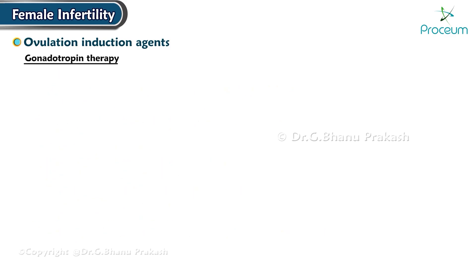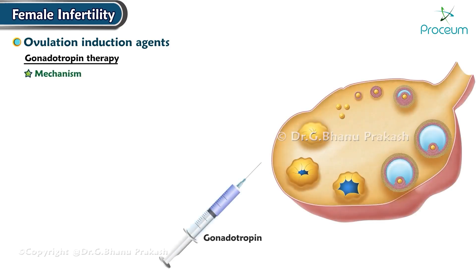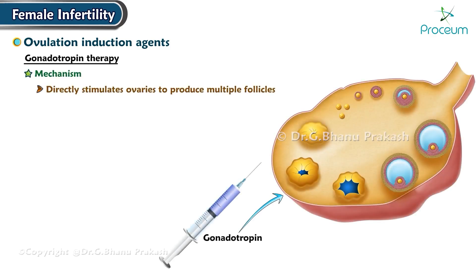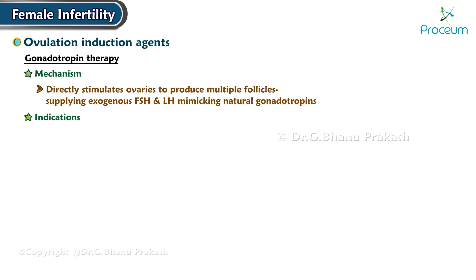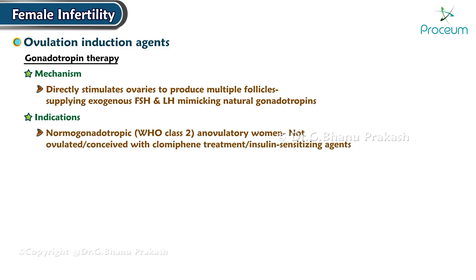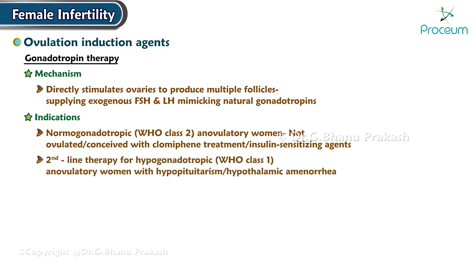Next, we'll learn about gonadotropin therapy. Mechanism: Gonadotropin therapy directly stimulates the ovaries to produce multiple follicles by supplying exogenous follicle-stimulating hormone and luteinizing hormone, mimicking the natural gonadotropins. Indications: It's used in normogonadotropic, or WHO Class II, anovulatory patients who have not ovulated or conceived with clomiphene treatment and/or insulin-sensitizing agents. Also, it serves as a second-line therapy for hypogonadotropic, or WHO Class I, anovulatory patients with hypopituitarism or hypothalamic amenorrhea.